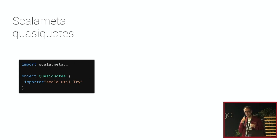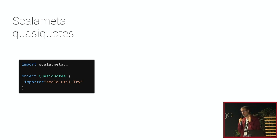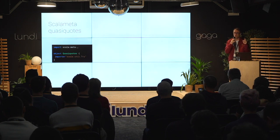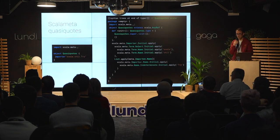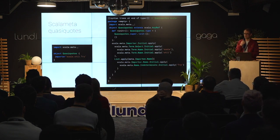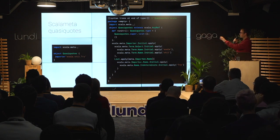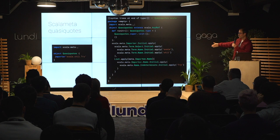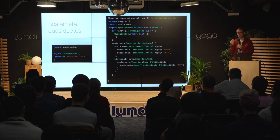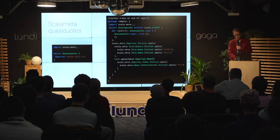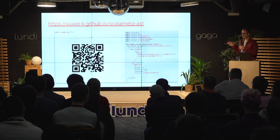I'll briefly mention quasi-quotes, which people familiar with Scala 2 macros may know. It's a construct from ScalaMeta that hides some tree complexity by providing macros that convert what looks like normal Scala code into the corresponding tree. You can use the `-Xshow-phases` typer option when compiling to see what the macro expands to. Quasi-quotes are a good tool for understanding trees, but they have their own gotchas — I'll mention those later.